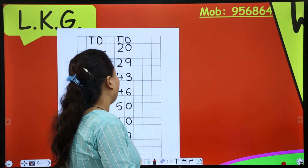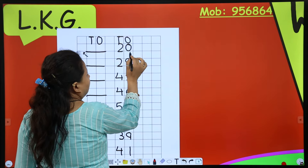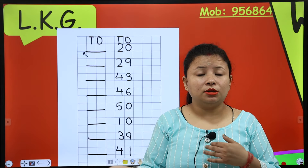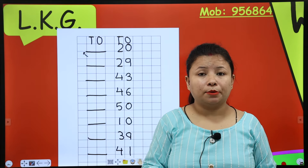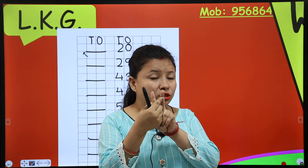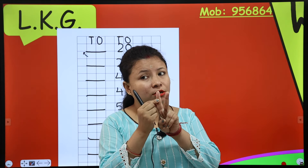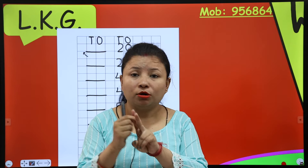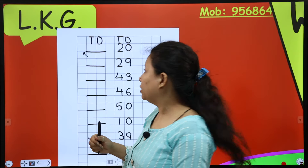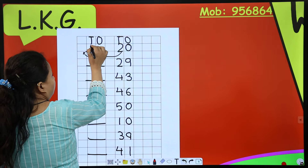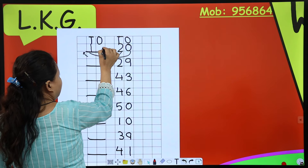So today we are going to do before numbers. Now this is 20. Before means you have to write the previous number, not the next number. You have to write the previous number. So 1, 2 — before 2 is 1. So for 20, what do you write? 1 and 0, previous number is 9 — that is 19.